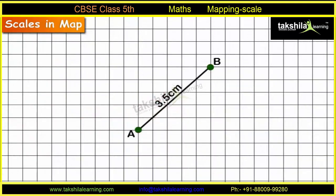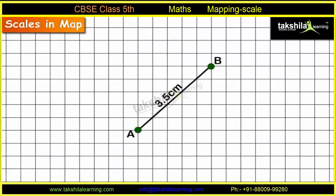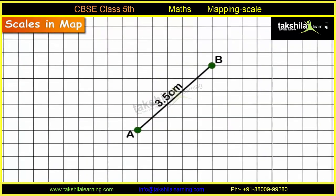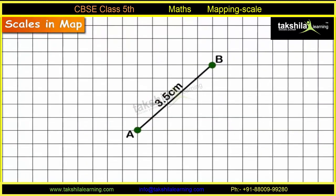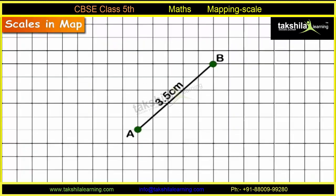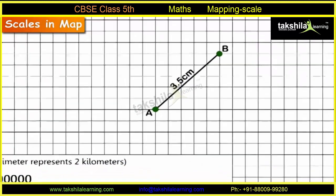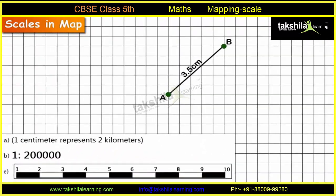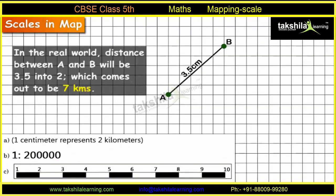Let us take another example. On this map, the distance between two places, A and B, is given to be 3.5 cm. The scale of this map is 1 cm is equal to 2 km. So, in the real world, the distance between A and B will be 3.5 x 2, which comes out to be 7 km.